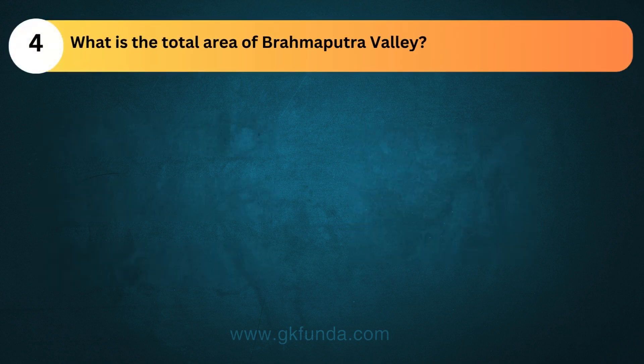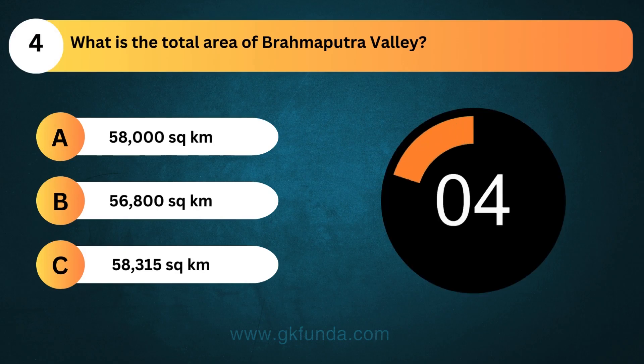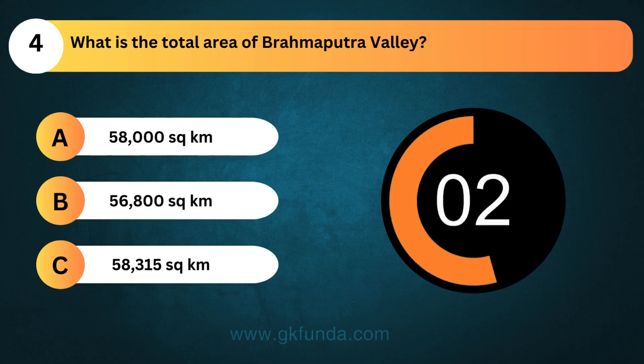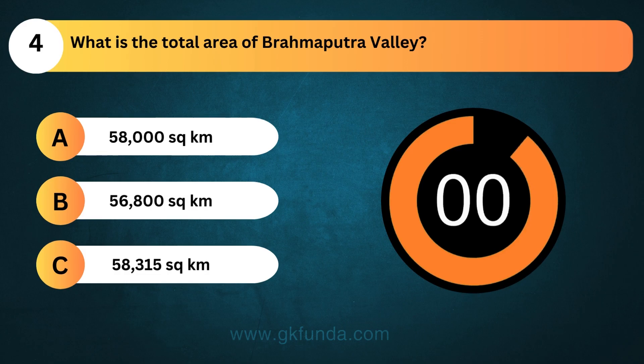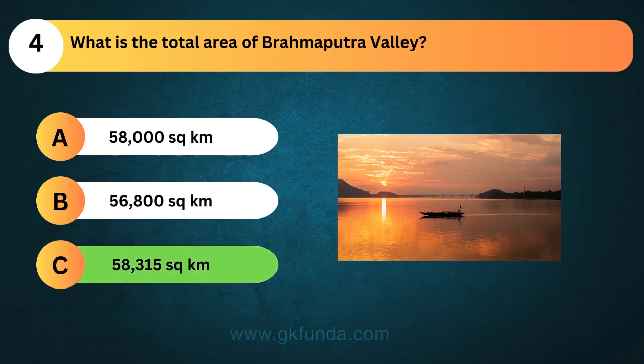What is the total area of Brahmaputra Valley? The answer is option C, 58,315 square kilometers.